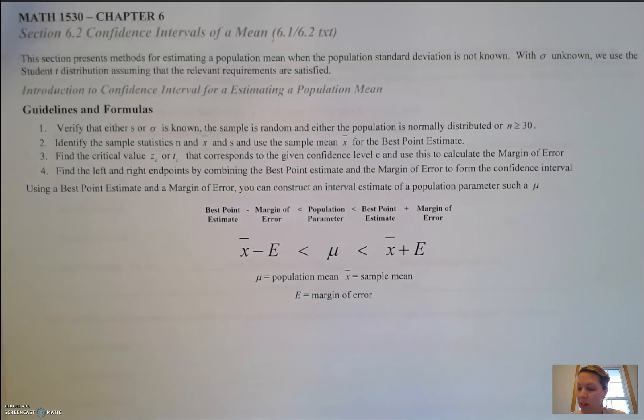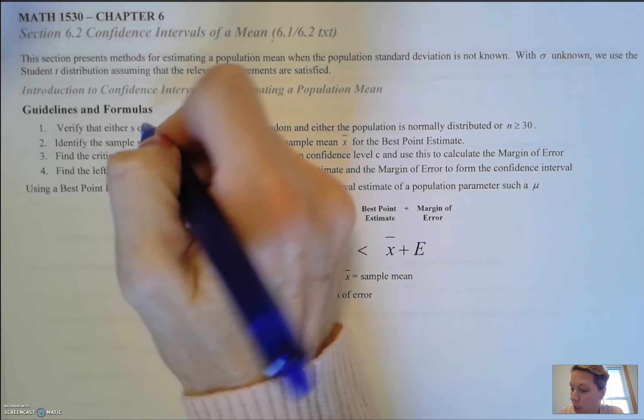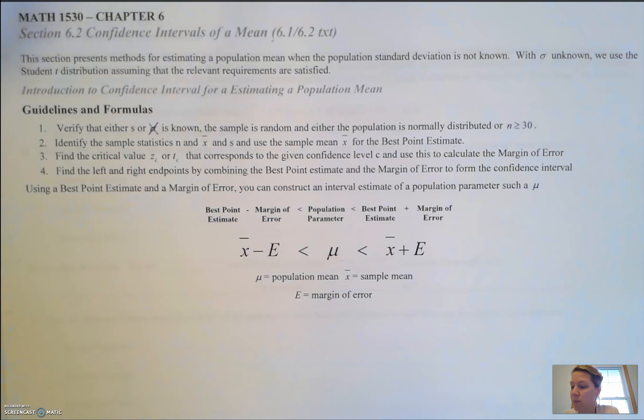Guidelines and format: First, we have to verify that either the sample standard deviation s or the population standard deviation is known. We're going to focus in this section on not knowing the population standard deviation. The sample is random and either the population is normally distributed or n is greater than or equal to 30.